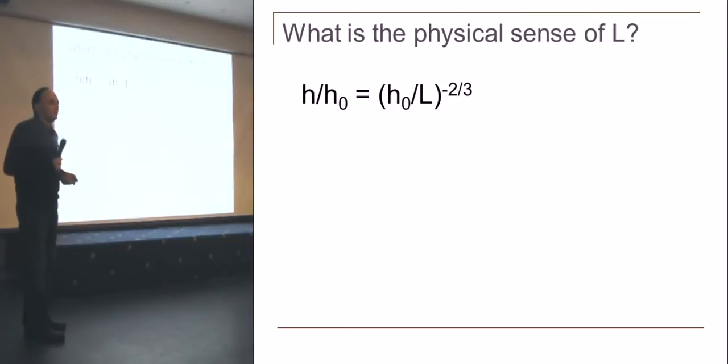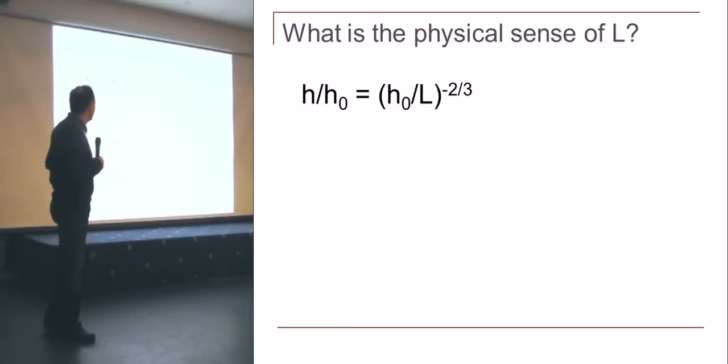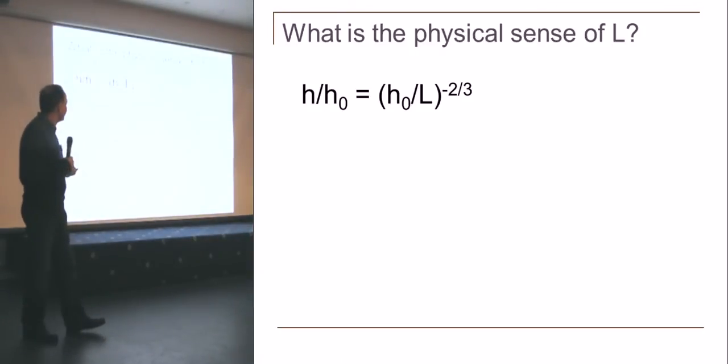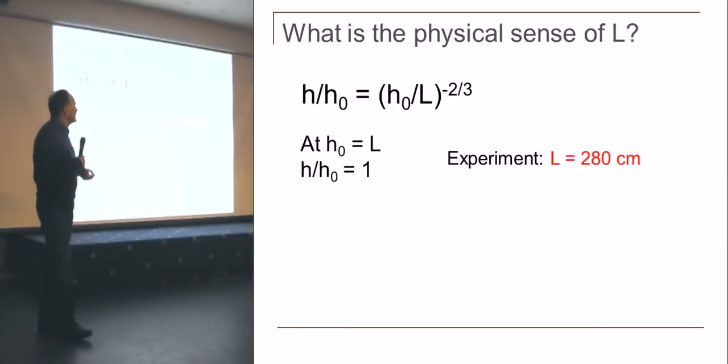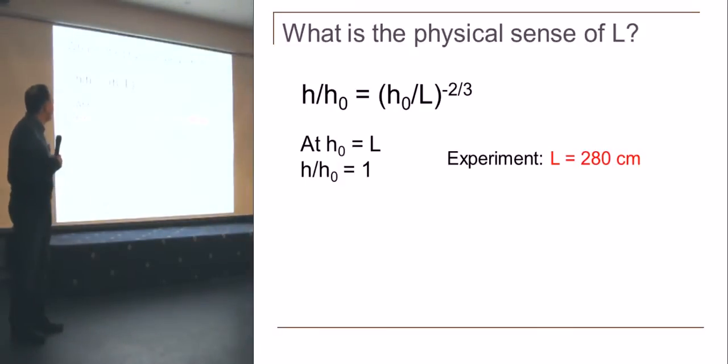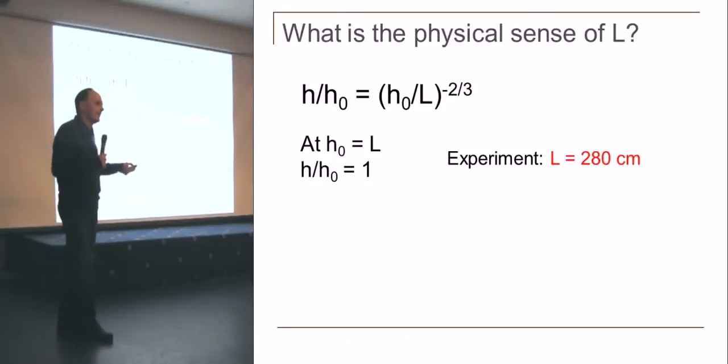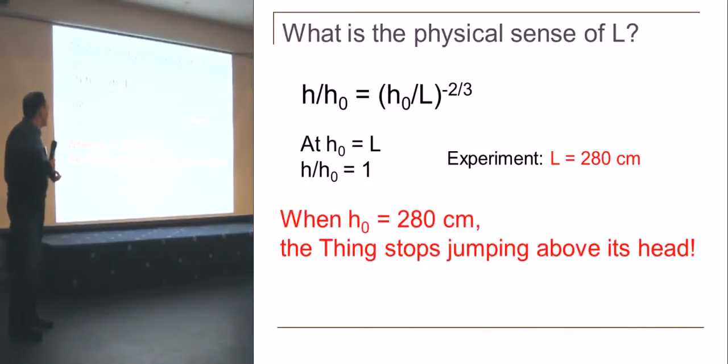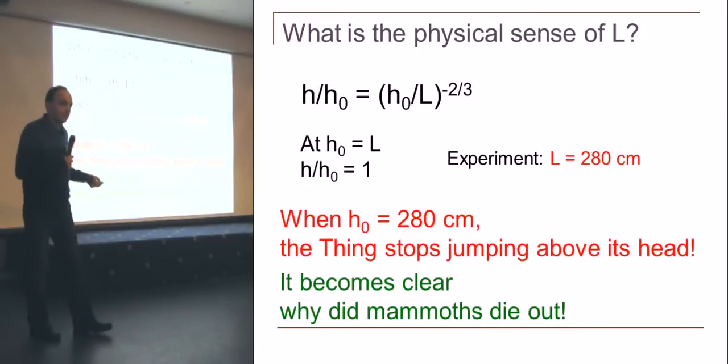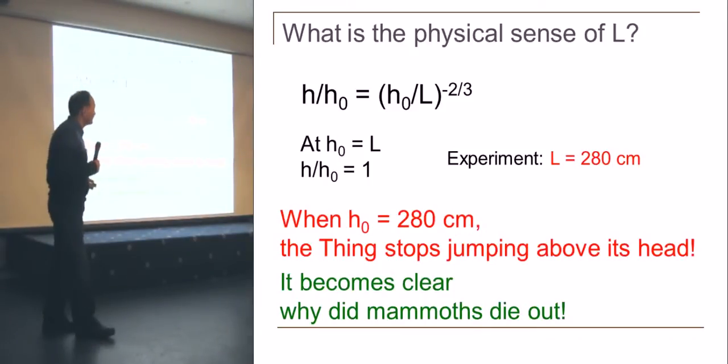If you remember, we had a characteristic length L here. If we plot the data, we get that at h0 when the length of a body is equal to L, then h over h0 is 1. Experiment shows that this length is 280 centimeters. What does it mean that h by h0 is 1? It means that if something is 280 centimeters tall, it cannot jump above its head. If it cannot jump above its head, it stops developing. If it stops developing, it dies. It becomes clear why mammoths died out. It's just because of that. They simply grew up.